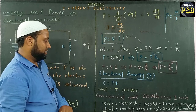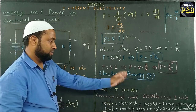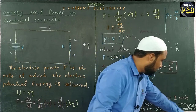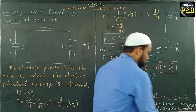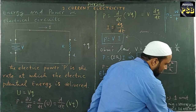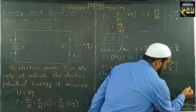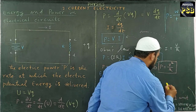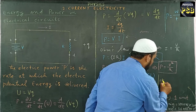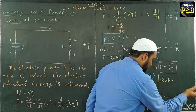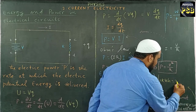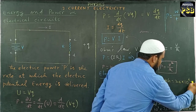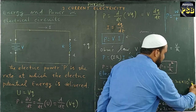Multiplying these together gives us 3.6 × 10⁶ watt-seconds. Therefore, one kilowatt-hour is equal to 3.6 × 10⁶ Joules.